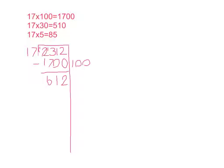Then I will get 612. 612 is quite close to 510, so I will subtract it by 510. And I will also put 30 next to it, because there are 30 17s in 510. Then I will subtract again.